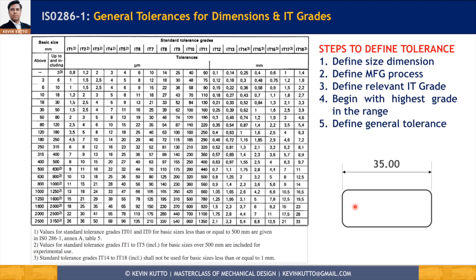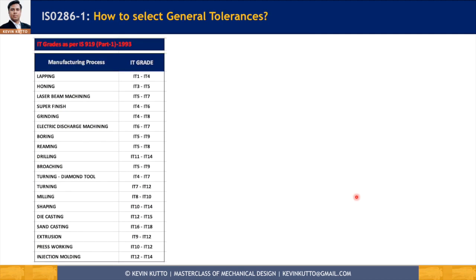Someone might ask: what if there are multiple operations — for example, we started with a lathe machine and then did grinding? You have to take the final process — the last process with which you achieve this dimension — for the selection of the IT grade.